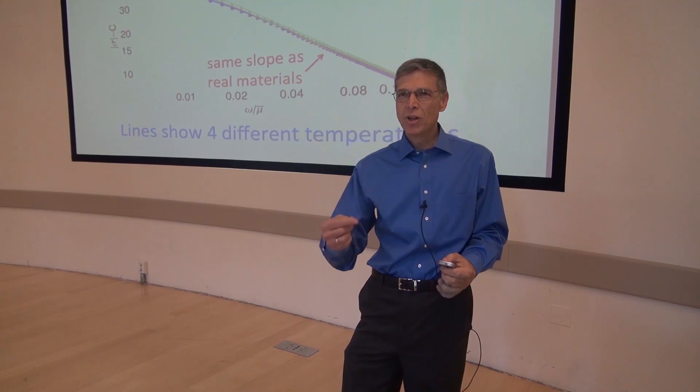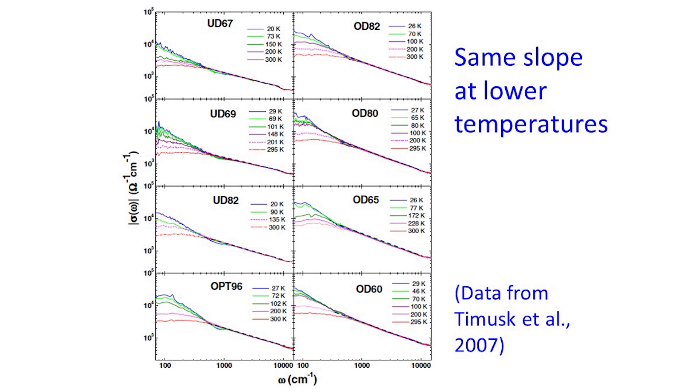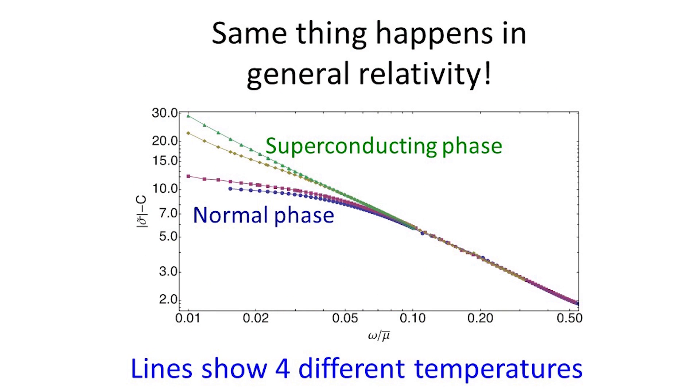If you lower the temperature to below the point where the material becomes superconducting, nothing changes. Here's data from eight related materials with lots of lines showing temperatures both above the point where they're superconducting and below the point where they're superconducting. And you see that the lines all agree on the right hand side of the diagram. And when we go to general relativity, we find exactly the same thing. We lower the temperature of our black hole below where it became superconducting. The bottom curve is the one in the normal phase that we had before. And the three upper curves are all at lower temperature when you have a superconducting regime. The lines all agree on the right hand side. And the slope is again just what's seen in the real materials.